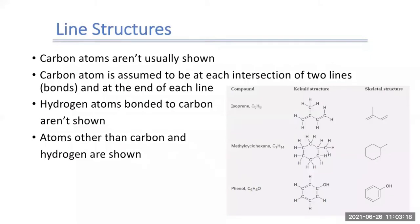In our line or skeletal structures, a couple of things. Carbon atoms aren't usually shown. Usually, most of the time we don't show them. On occasion we might. And the carbon atom is assumed to be at each intersection of two lines and at the end of each line. So each of the lines we draw represents a bond. So if we draw two lines that connect to each other, those two bonds and in the center is supposed to be a carbon atom.